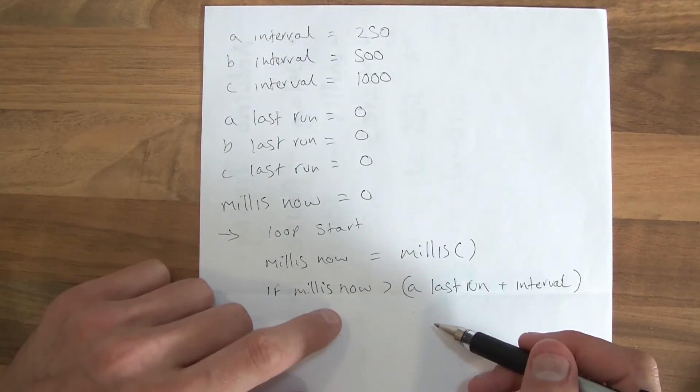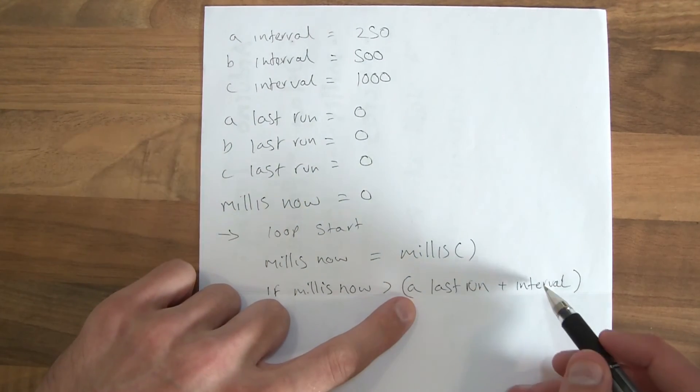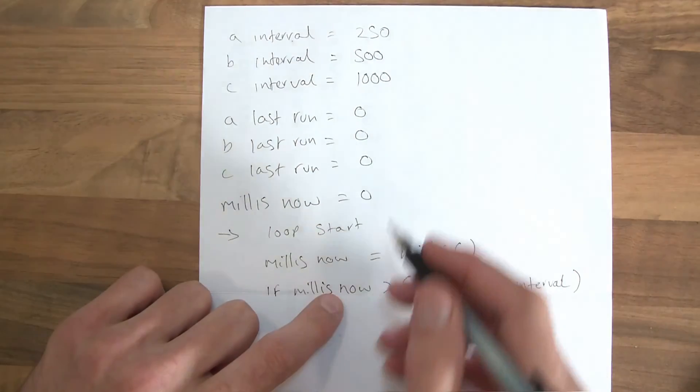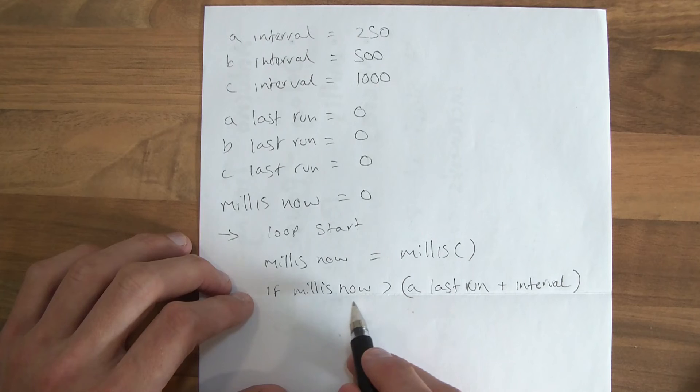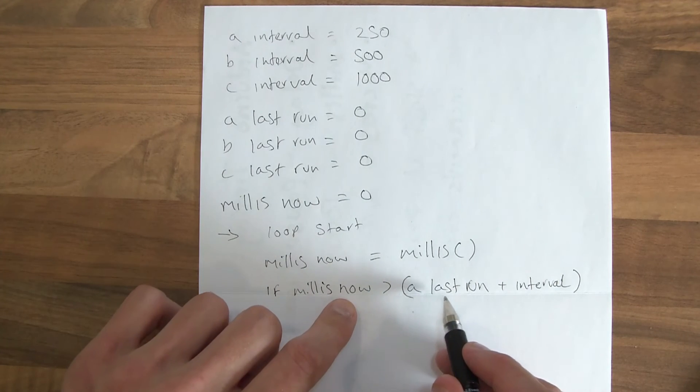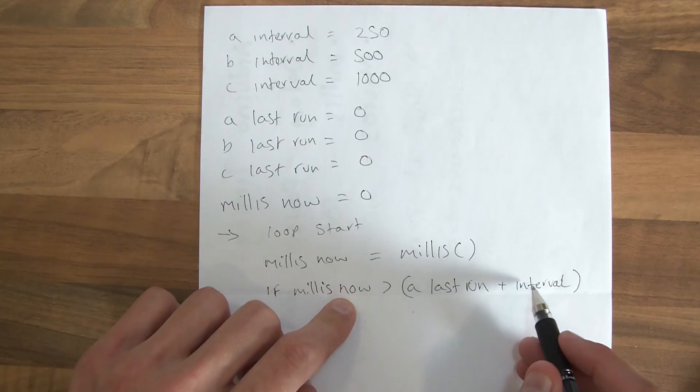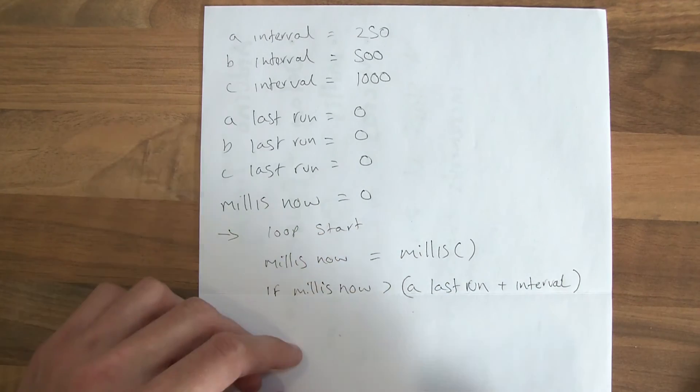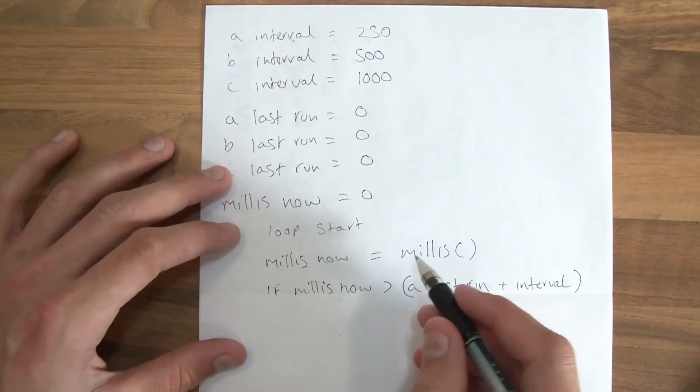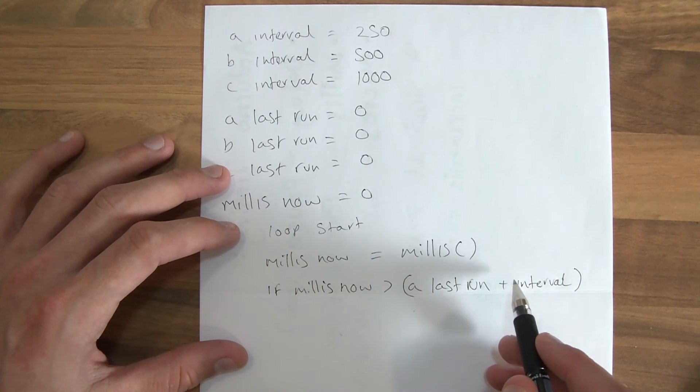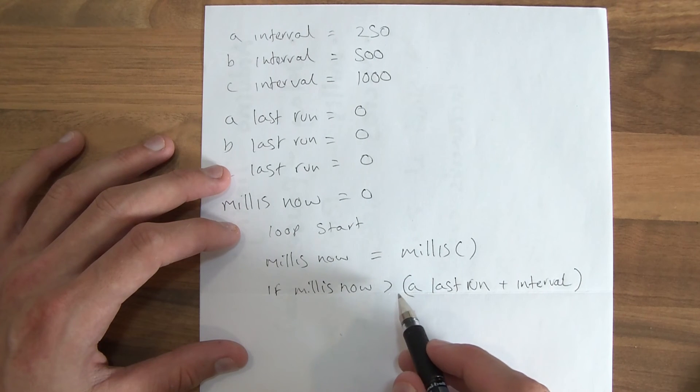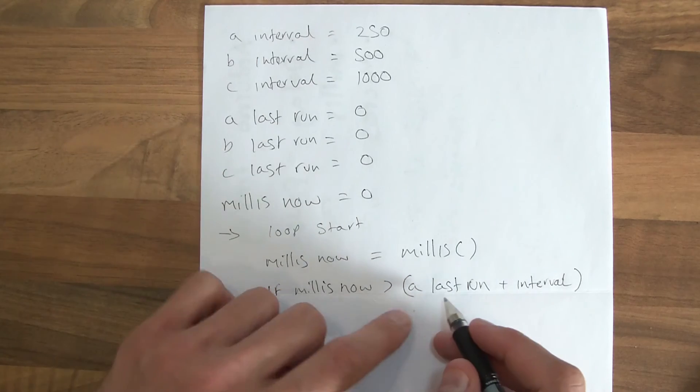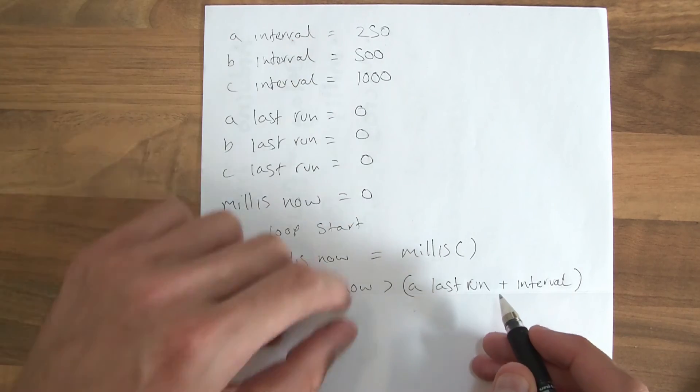So if millis now is greater than a last run plus interval. So to start with, the last run was zero and the interval is 250. So if we've just turned this on, millis now would be zero milliseconds. So if millis now, which is zero, is greater than the last run, which is zero plus interval, which is 250, then it's not going to run, is it? Because it's not due. So the only time that would run is if millis now is greater than the time it was last run plus the interval. So if the time last run was 250 milliseconds, and the milliseconds now is 500, then it will run.